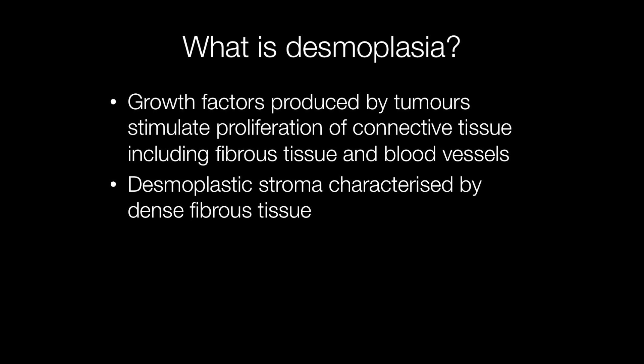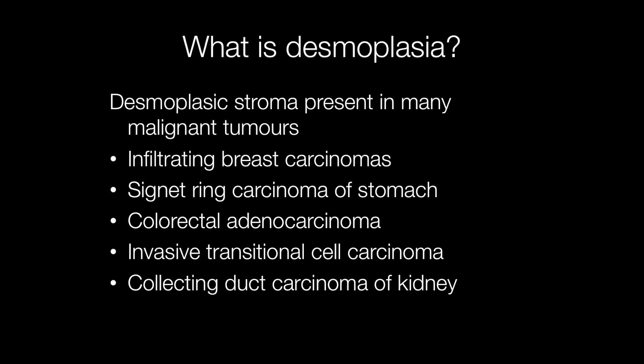A desmoplastic stroma is characterised by dense fibrous tissue, making a tumour feel hard. A desmoplastic stroma is produced by many tumours, particularly malignant ones.